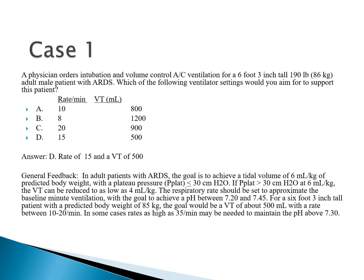The rationale: 500 ml is close to 6 ml/kg. If plateau pressures are north of 30, you could go as low as 4 ml/kg. Permissive hypercapnia allows tolerating mild acidosis temporarily while the kidneys retain bicarbonate to buffer the effect over time.